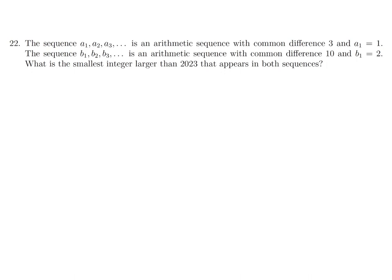Sequence A has first term 1 and common difference 3, so its terms are of the form 1 plus 3K. Sequence B has first term 2 and common difference 10, so its terms are of the form 2 plus 10N. The smallest integer greater than 2023 appearing in both sequences requires 1 plus 3K equals 2 plus 10N, meaning K must be greater than 674.